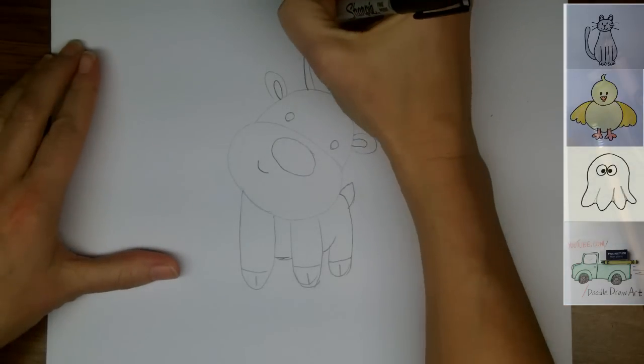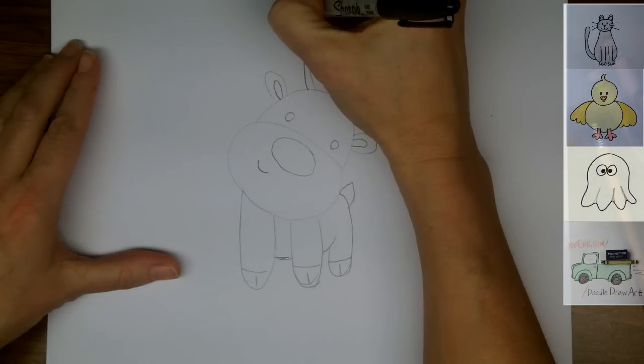So with your black marker now, let's trace over the outline of everything that we just drew.